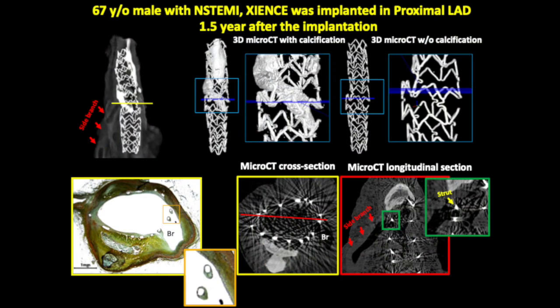The next case is a 67-year-old male with non-ST elevation MI and a Zion stent implanted in the proximal left anterior descending artery 1.5 years after implantation. This is a fairly successful stent — the struts are covered. Why did it not thrombose? Probably because of anticoagulation, and also these struts are further apart than usual. You can see they are covered with new intima and the side branch remains patent, as shown in both histology and microCT. Calcification is visible, and removing the calcium reveals the distorted shape at the bifurcation.